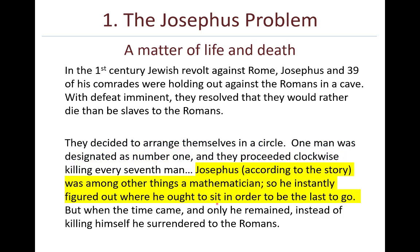Josephus, according to the story that he wrote, was, among other things, a mathematician. So he instantly figured out where he ought to sit in order to be the last to go. But when the time came, and only he remained, instead of killing himself, he surrendered to the Romans.